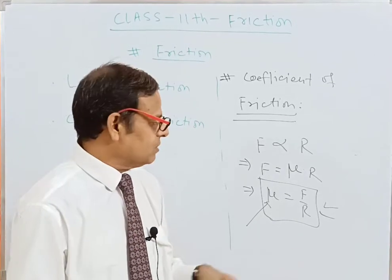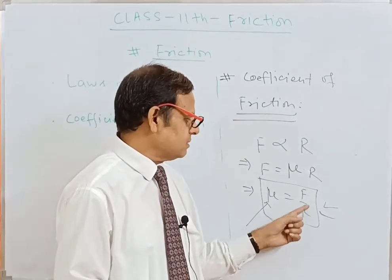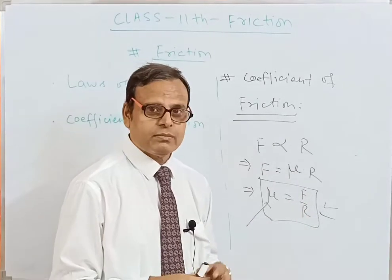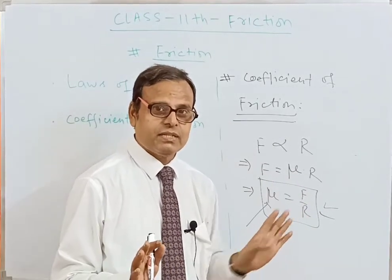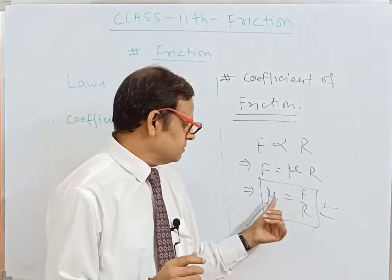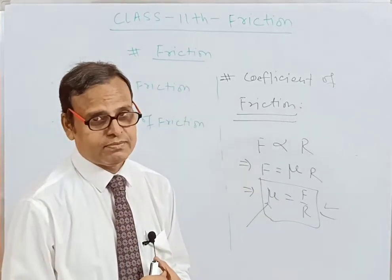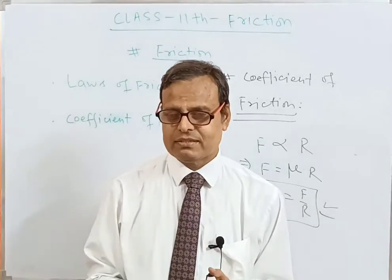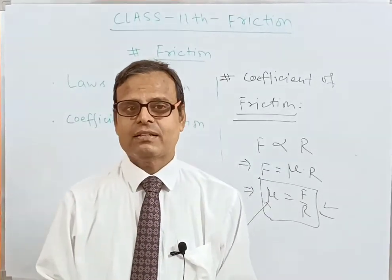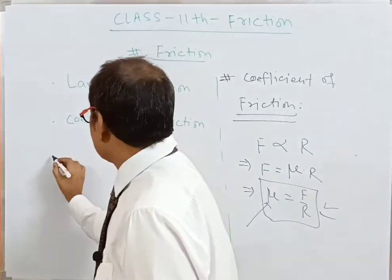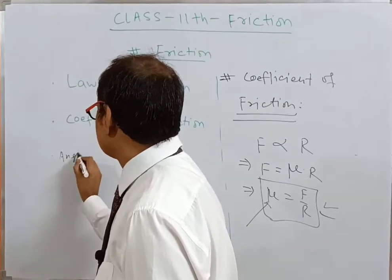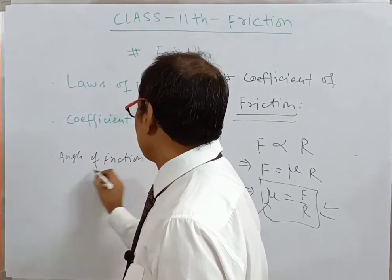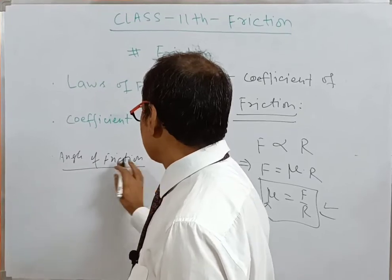The coefficient of friction mu equals F over R is a very important formula: force of friction divided by normal reaction. There is no unit for the coefficient of friction, because both F and R are forces and have the same units — therefore, being a ratio, mu has no unit.